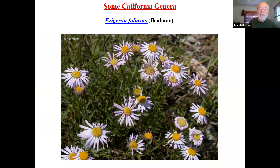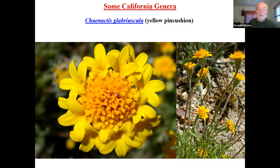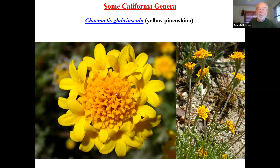The fleabane, Erigeron foliosus — like a purple daisy, commonly called purple daisy — is common all over chaparral and mountains, and also at the Santa Rosa Plateau. The yellow pincushion, Chaenactis glabriuscula, is a really interesting plant: the flowers on the edge have larger petals than the flowers in the disc, but they're not ligulate — they're still actinomorphic and radiated, just with a much larger corolla on the outer edge compared to the smaller ones in the center.